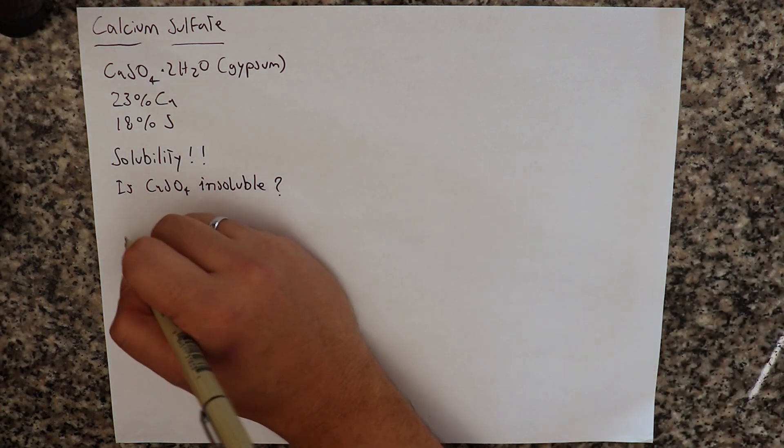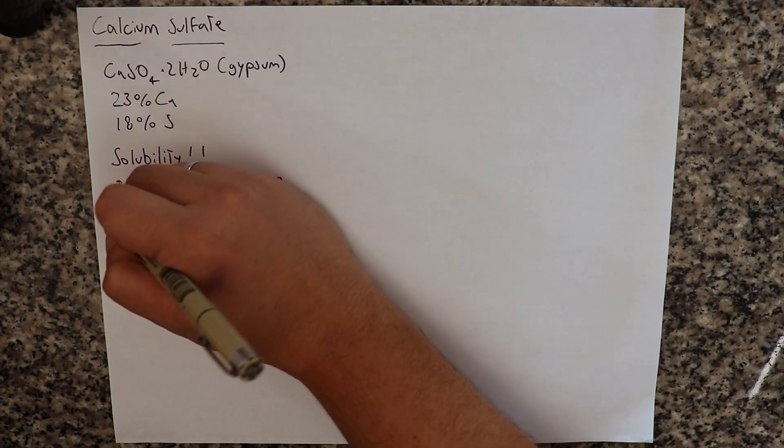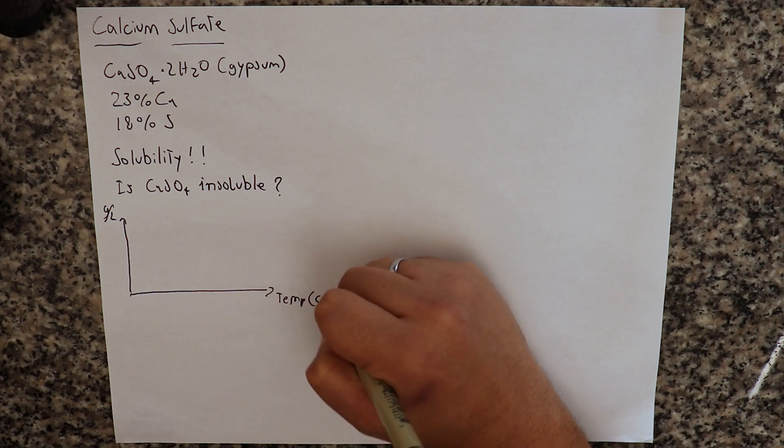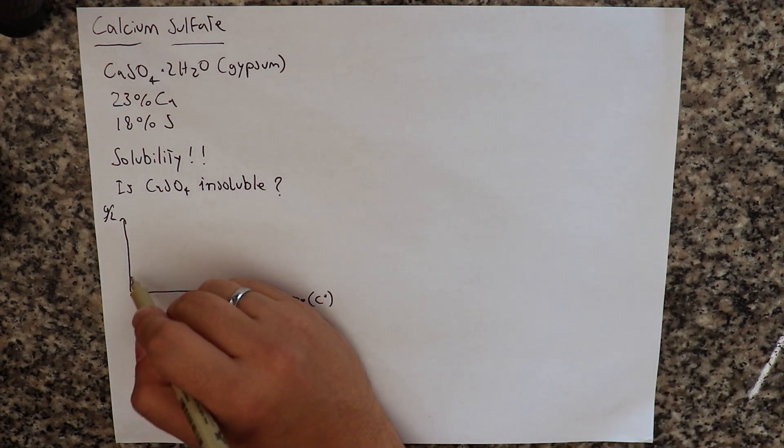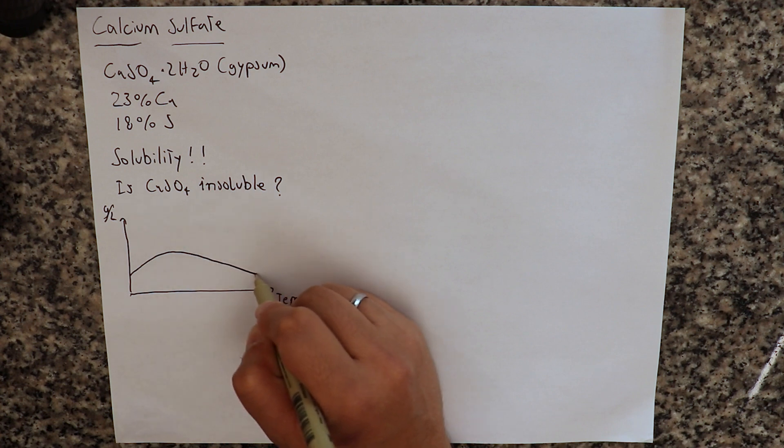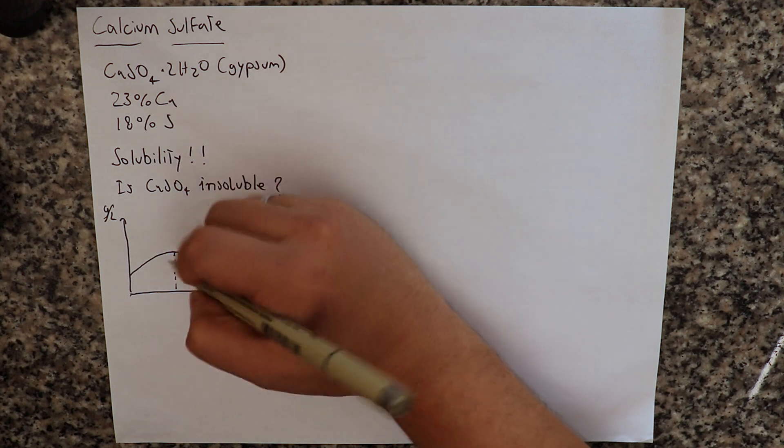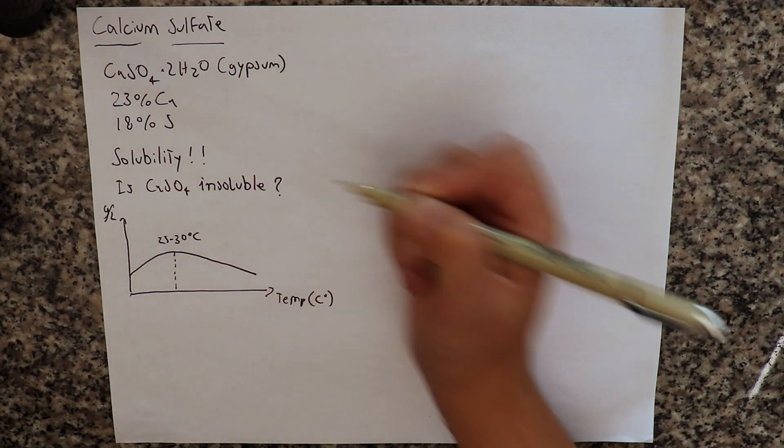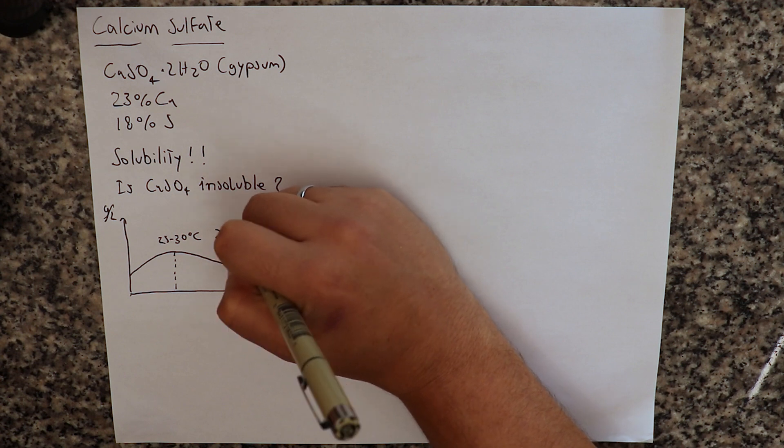So calcium sulfate, if you look at the solubility of calcium sulfate as a function of temperature, you look at the grams per liter solubility of calcium sulfate as a function of the temperature, let's say in degrees centigrade. You'll see that calcium sulfate has something that we call retrograde solubility, which means that the solubility goes up and then it goes down as a function of temperature. This max here is at around 25 to 30 degrees celsius, and that's the point of maximum solubility which is around 2.5 grams per liter.